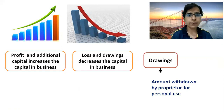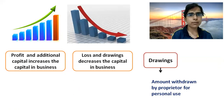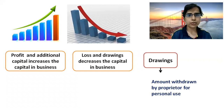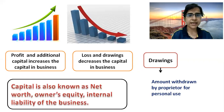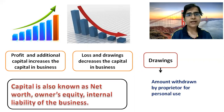For example, Mr. Ram withdraws some amount from the business for his son's education fees. That is a personal expense, so it will be treated as drawings. An amount withdrawn by a proprietor for personal use is known as drawings. Capital is also known as net worth, owner's equity, and internal liability of the business.